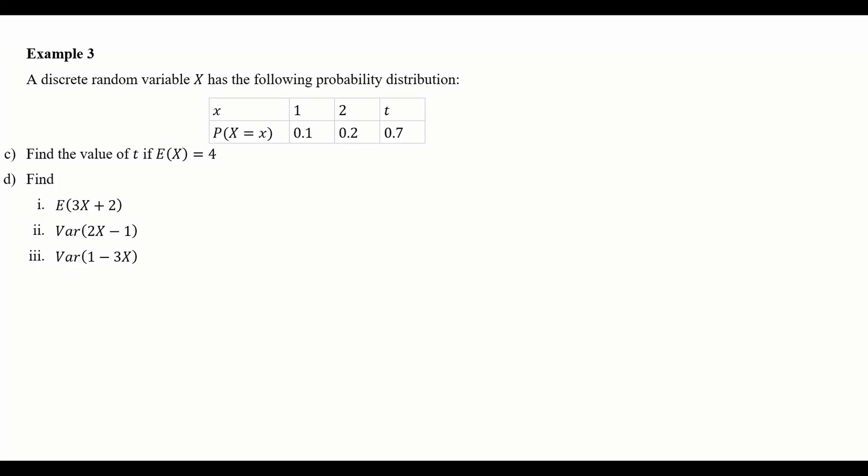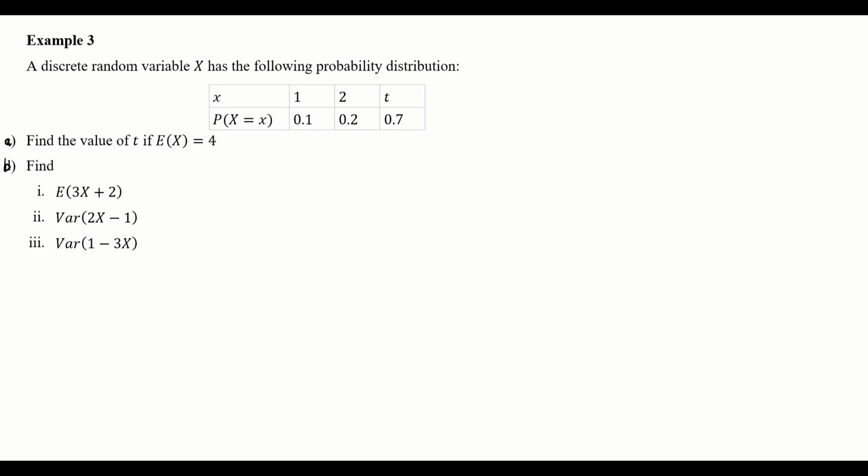Example 3: a discrete random variable X has the following probability distribution table. The values of X are 1, 2, and t, with corresponding probabilities 0.1, 0.2, and 0.7. For the first part of the question, we need to find the value of t, given that the expected value of X is 4.